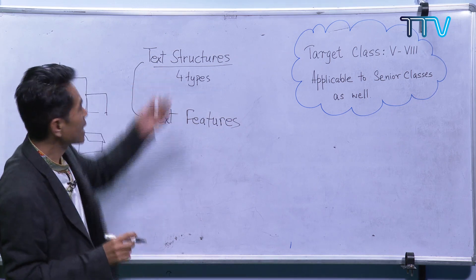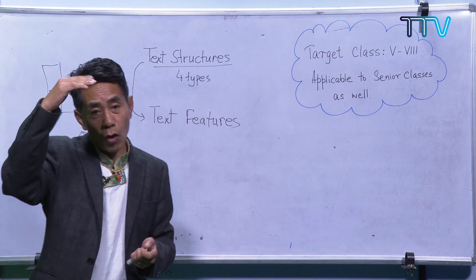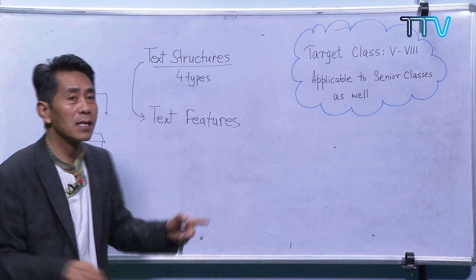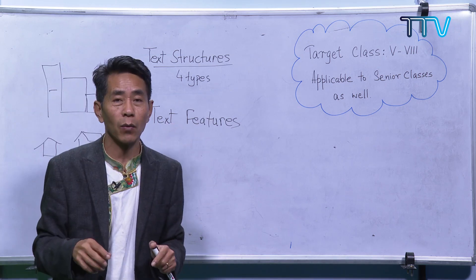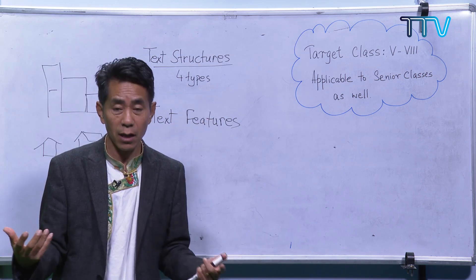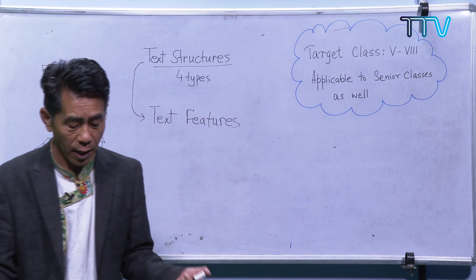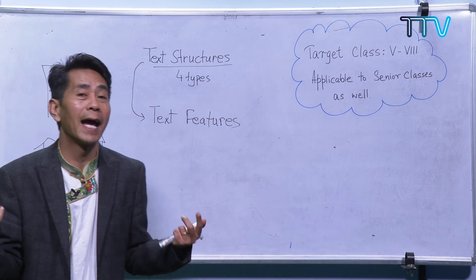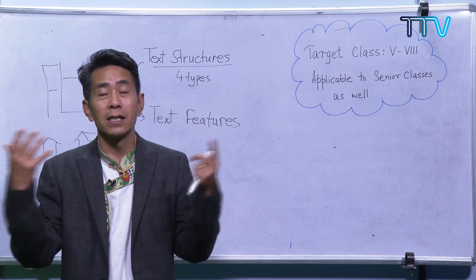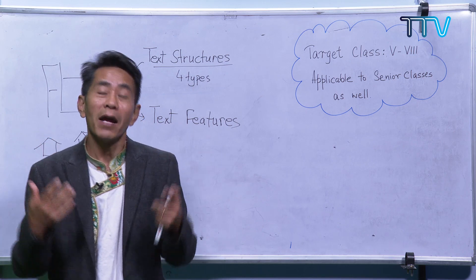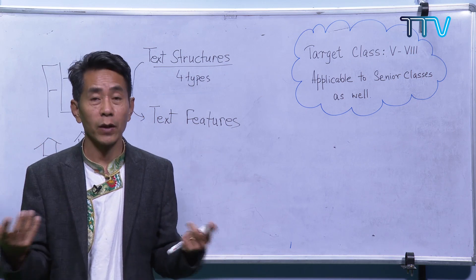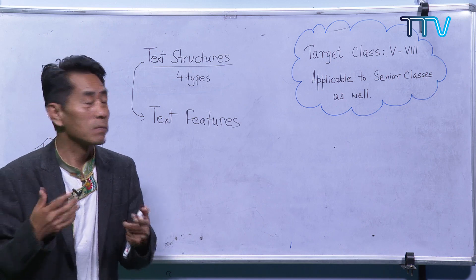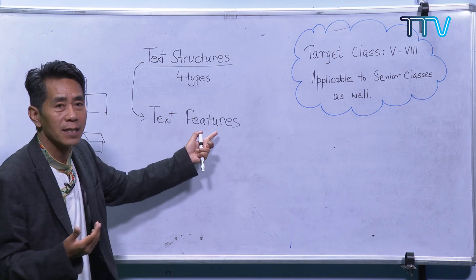The text structure is how the writer organizes all these things. Text features are the parts — for example, what are the features of my body? Hand, legs, shoulder, head. What are the features of my face? Nose, eyes, ears, mouth, tongue. All these are features. Similarly, in non-fiction, there are different features of a text.